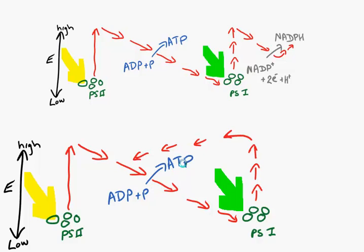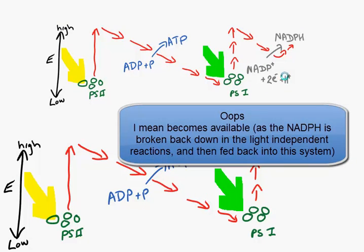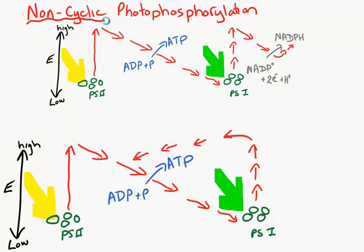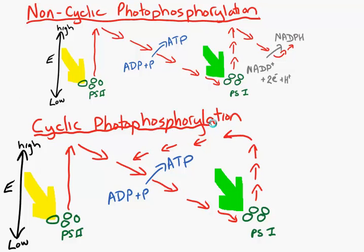With ATP alone, plants can't do photosynthesis. But this is a temporary solution to utilize the light until more NADP+ becomes available. The first situation was called non-cyclic photophosphorylation, and the second is called cyclic photophosphorylation.